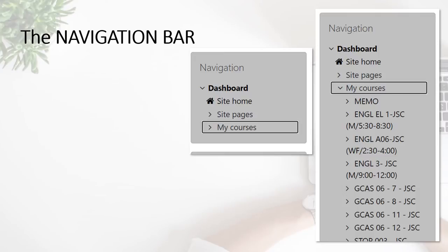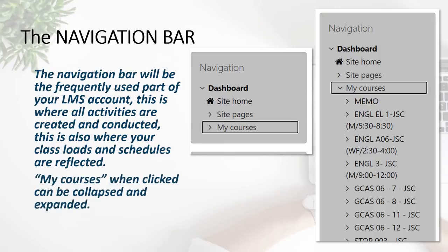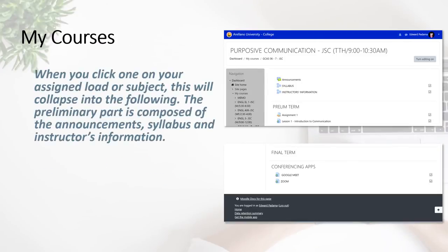When we zoom into the navigation bar located at the left side of your screen, the navigation bar will be the frequently used part of your LMS account. This is where all activities are created and conducted, and where your class loads and schedules are reflected. When you click 'My Courses', you will be able to collapse and view the load or subjects that you are assigned to for that particular semester.